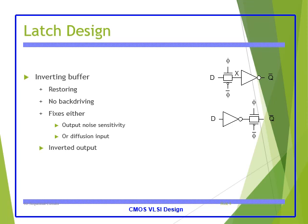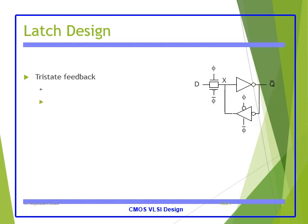It is a latch design. Here we are using a NOT gate first, and then a transmission gate. Restoring is enabled and no back driving occurs in the latch design. This also fixes the output noise sensitivity and diffusion input, providing an inverted output. The tri-state feedback is given here — the NOT gate output is fed back to the NOT gate input, enabling the feedback path.